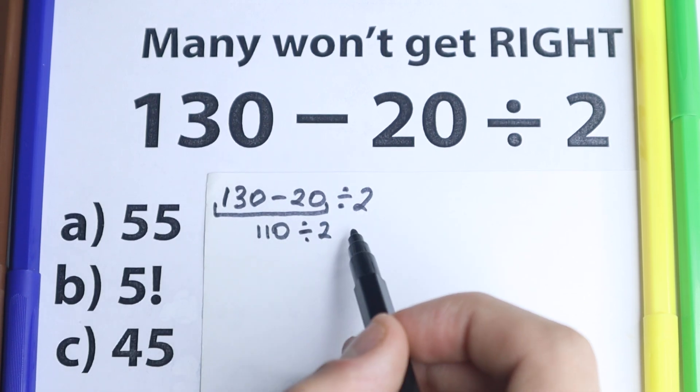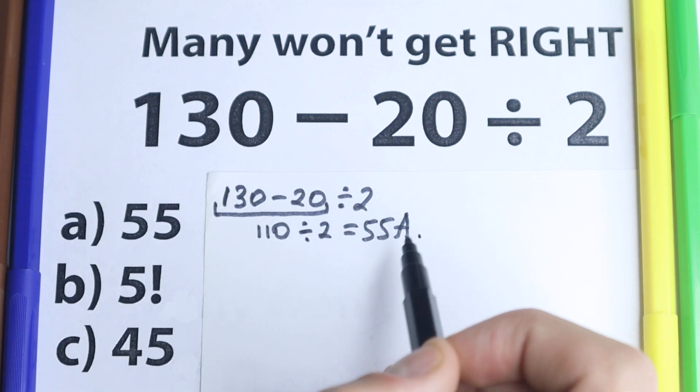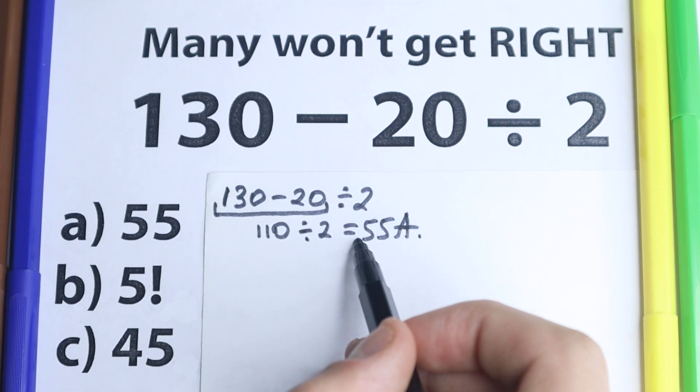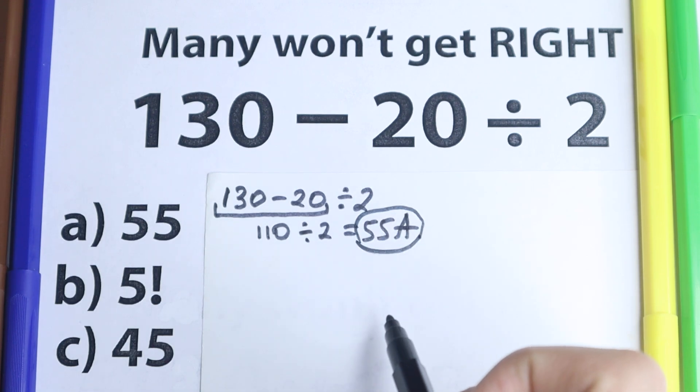Which is equal to 55. So they say, 55, option A, this is the first option. Option A is a correct answer to this problem.